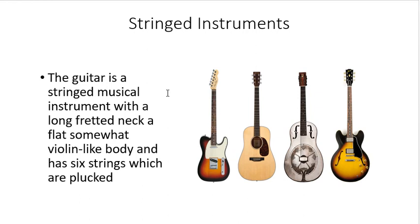The guitar is a string musical instrument with a long-framed neck, a flat somewhat violin-like body, and six strings which are plucked. There are different variations of guitar — we have the electric guitar, the bass guitar, and some other types not mentioned.